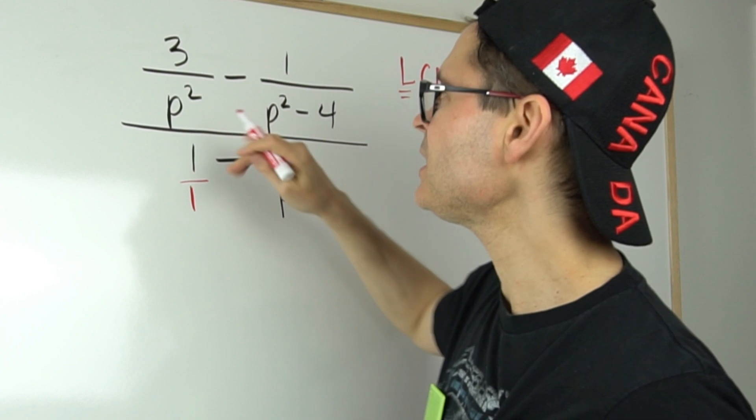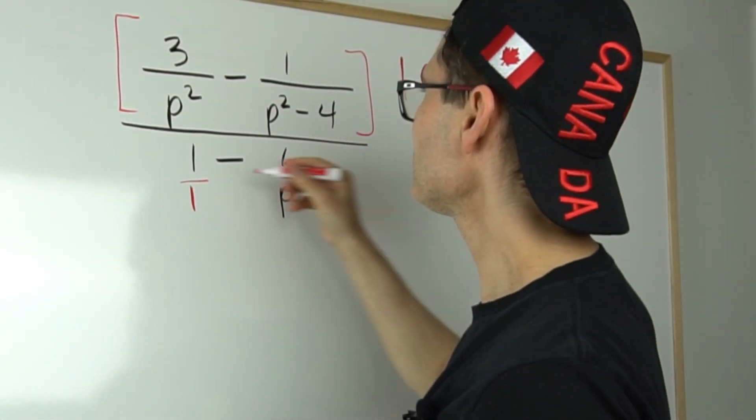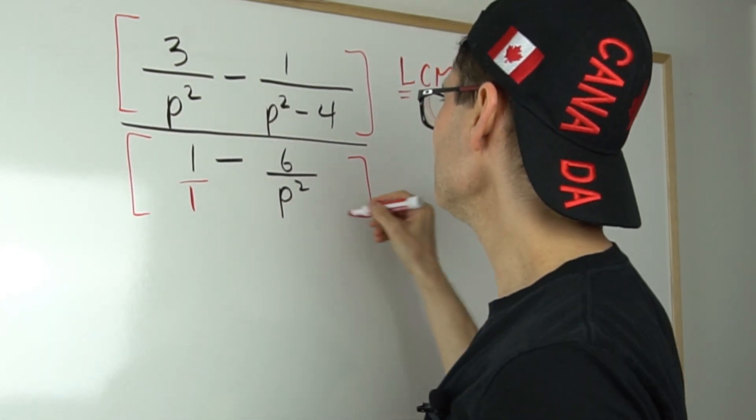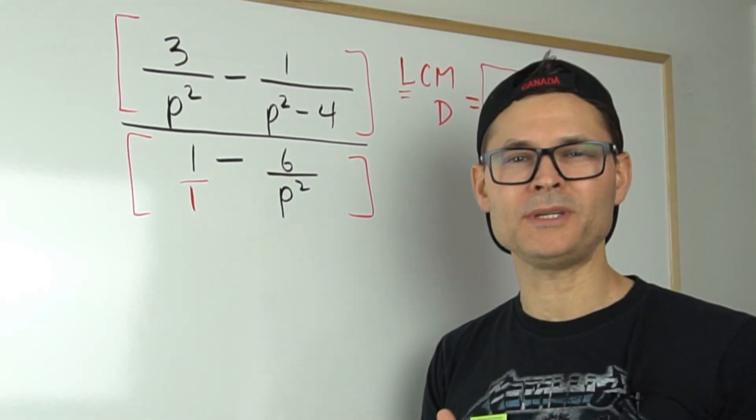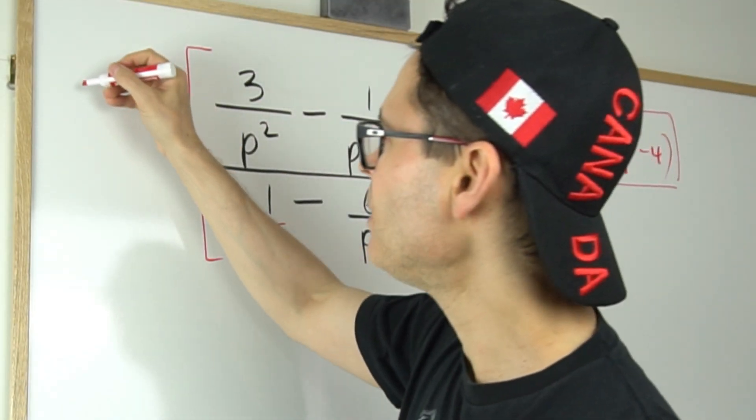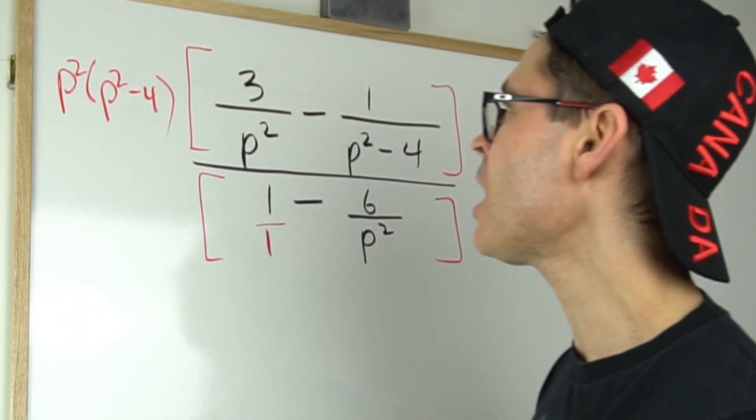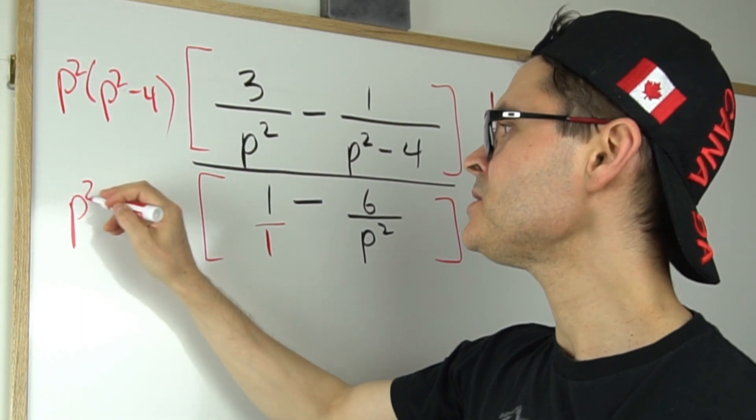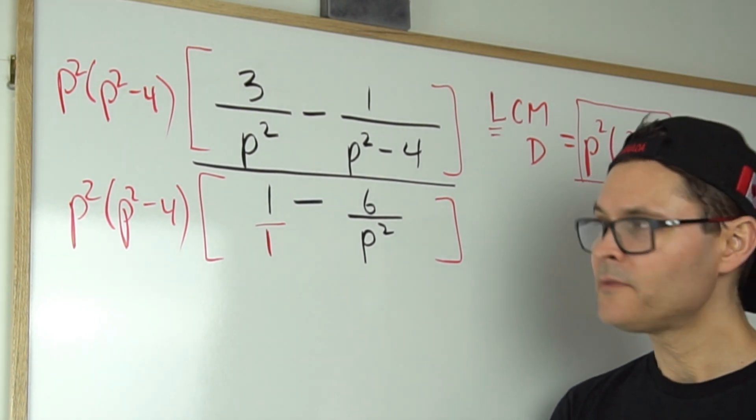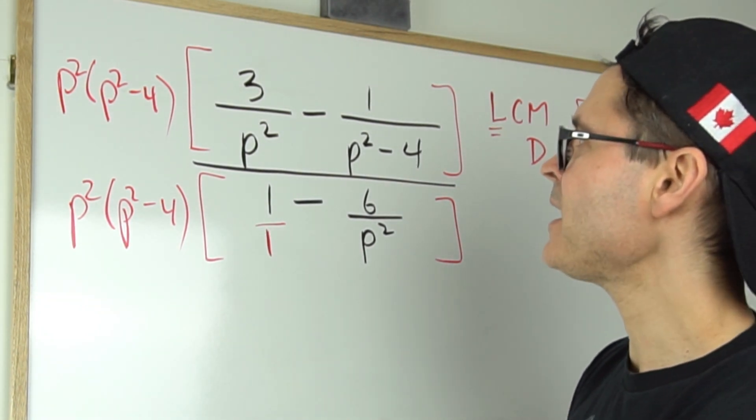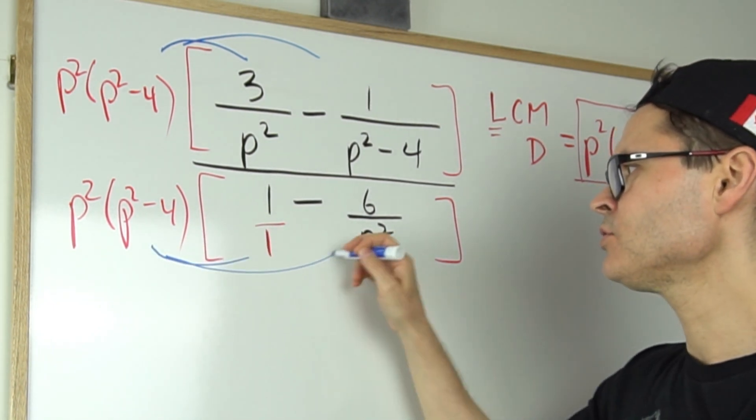So what I could do is think of the bigger fraction and multiply the numerator and the denominator by the lowest common multiple, because really all I'll be doing here is multiplying by one. So if I multiply by p squared times p squared minus four in the top and p squared times p squared minus four in the denominator, then watch what I can do. I can expand that through in the numerator and I can also expand it through in the denominator.